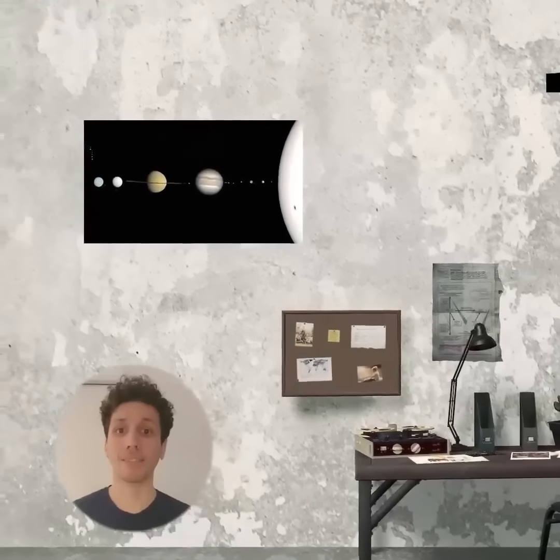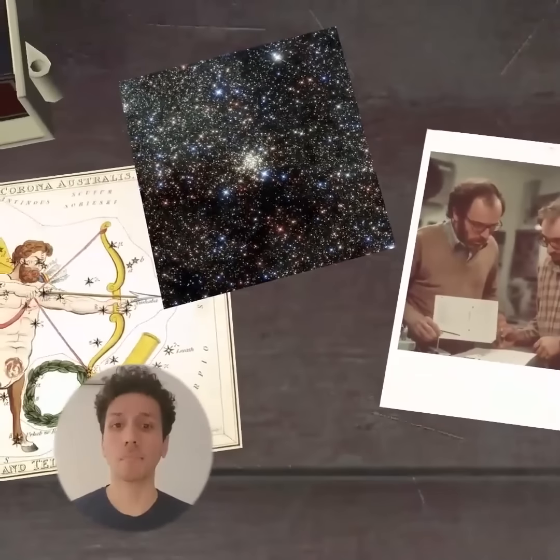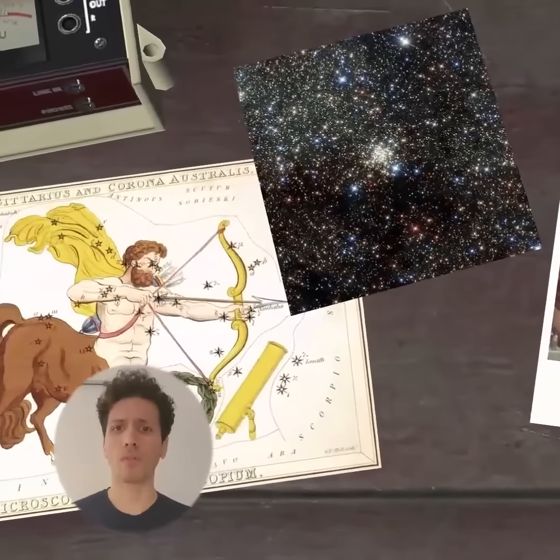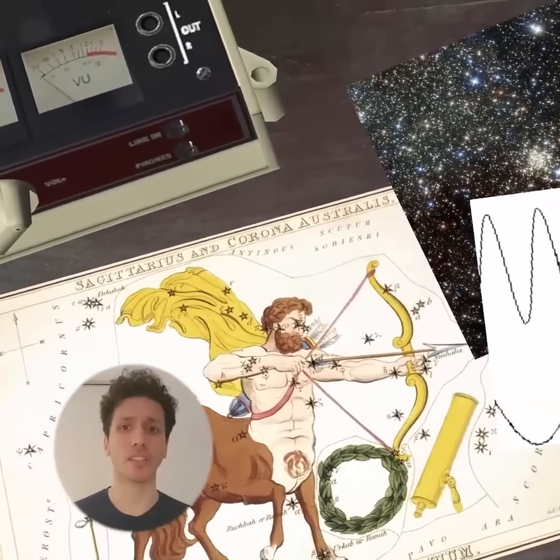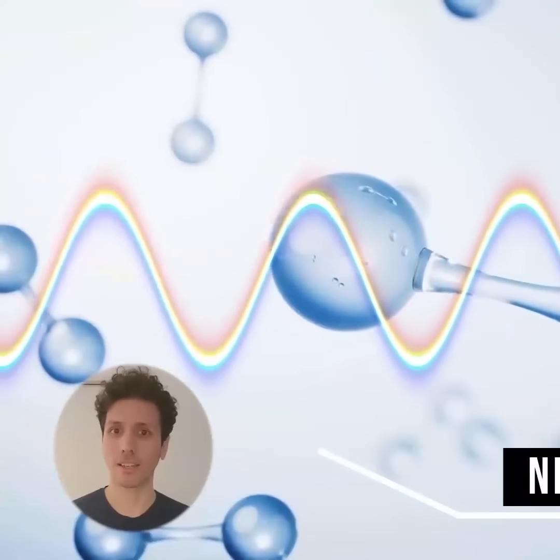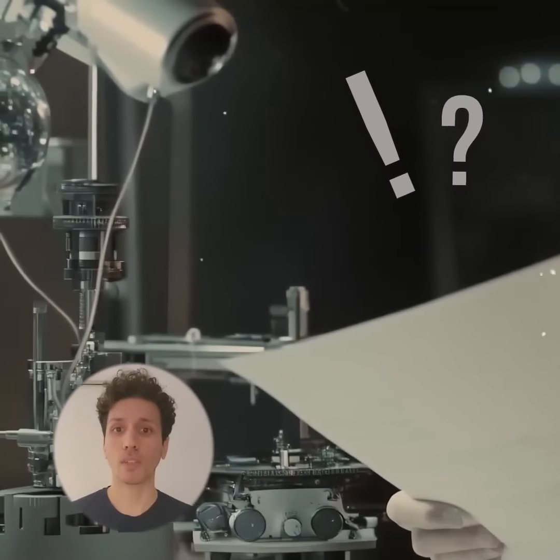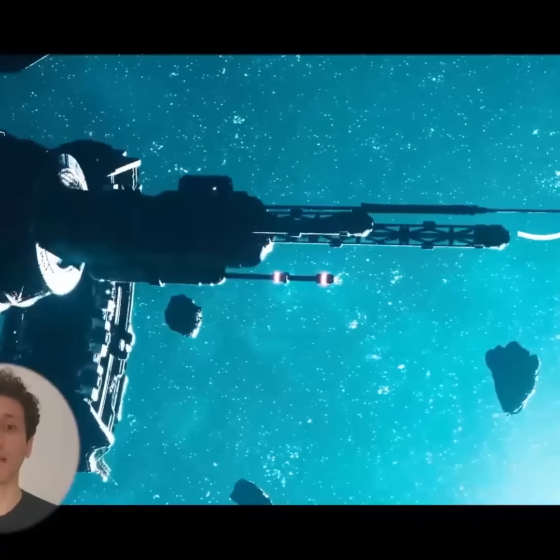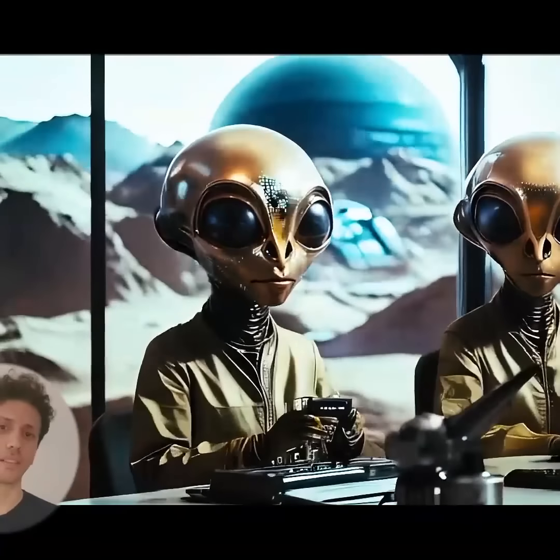It's the year 1977, and astronomers are stunned. They've just picked up a bizarre and really powerful radio signal coming from the direction of the constellation Sagittarius. The signal shockingly matches the frequency of neutral hydrogen. What's the big deal? This is the very frequency many astronomers believe might be used by extraterrestrial civilizations trying to communicate.